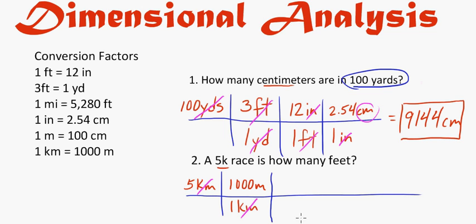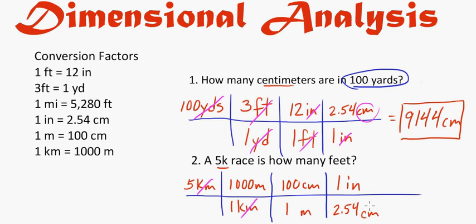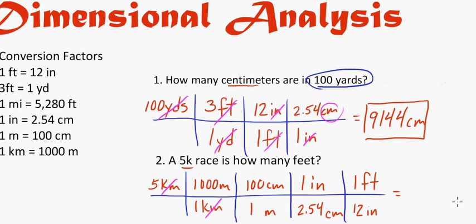Now I need meters on the bottom. I have 1 meter equals 100 centimeters, so I'll put 1 meter on the bottom and 100 centimeters on top. Then I'll put centimeters on the bottom next — I know 2.54 centimeters equals 1 inch, so I put 1 inch on top for every 2.54 centimeters. Then the last step is inches to feet: 12 inches on the bottom for every 1 foot. Now I have to multiply across the top and divide by the product of the denominator.